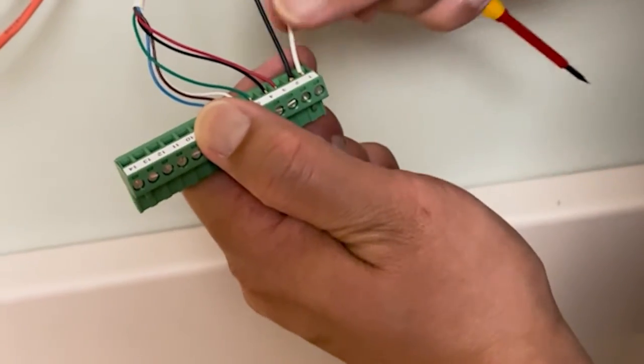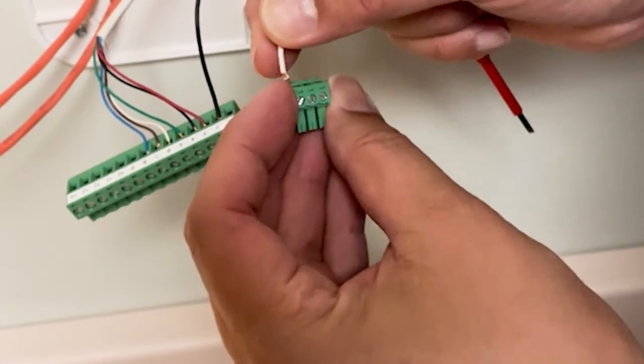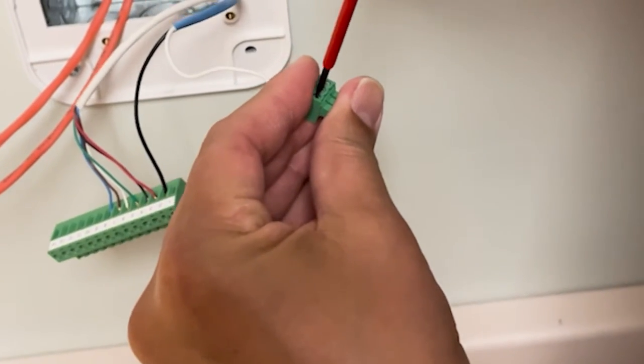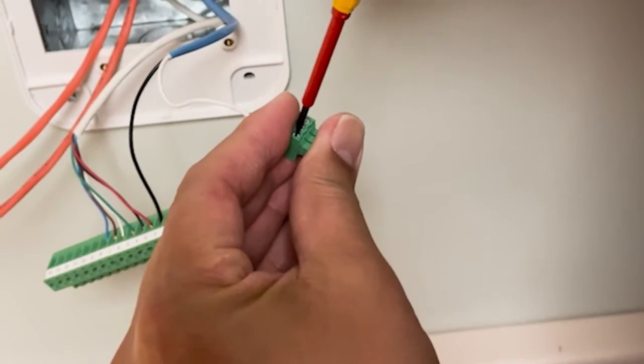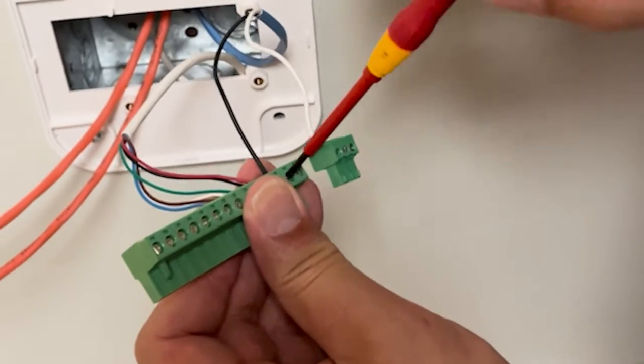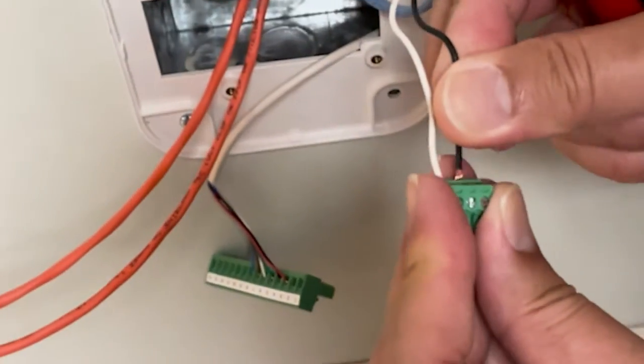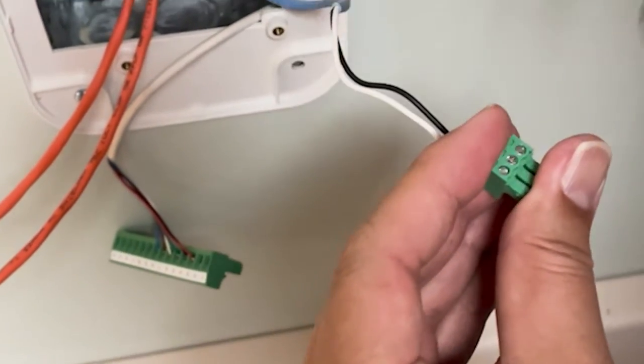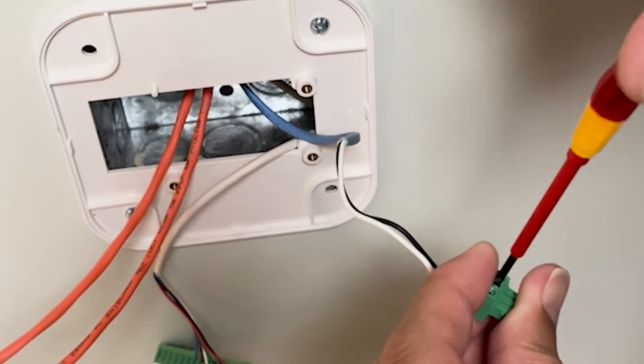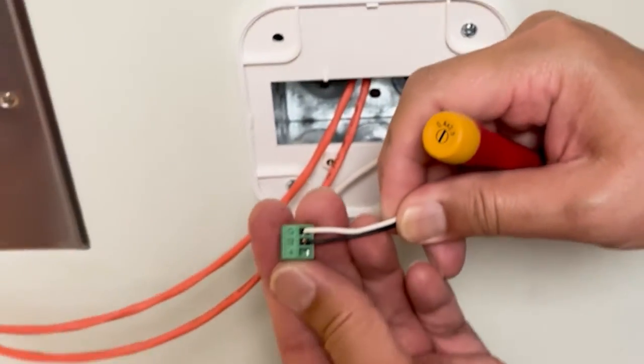Now we're going to add our power connector. We're going to remove the wires from the original connector and put those into ours. The wiring colors are dependent upon how you're connected to your transformer in the ceiling or wherever it is located. In this case white was the 24 volt and the black is the common. Now we've got our power done.